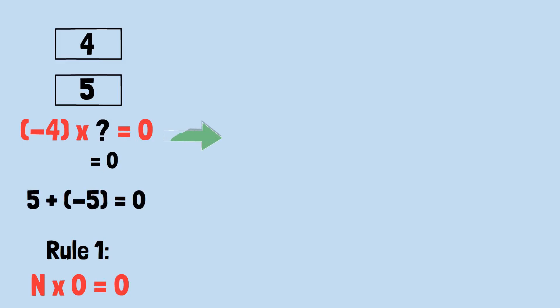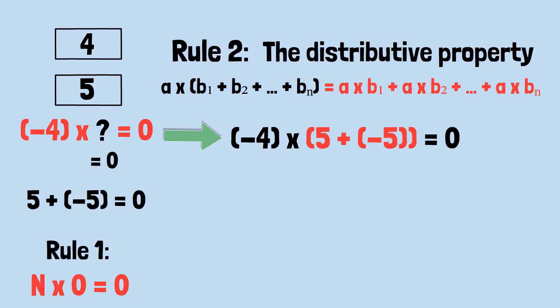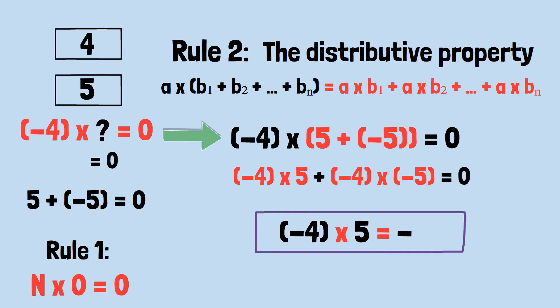Now for the proof. Let's say we have two positive numbers. Let's call them 4 and 5 to make this concrete. We know that (-4) × 0 = 0 from rule 1. But here's a clever trick. We can replace that 0 with something else that also equals 0. Since 5 + (-5) = 0, we can substitute (-4) × (5 + (-5)) = 0. Now we use rule 2, the distributive property, to split this up. (-4) × 5 + (-4) × (-5) = 0. We already know that (-4) × 5 = -20. A negative times a positive is negative.